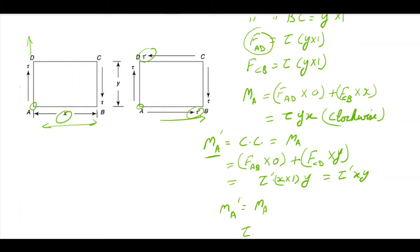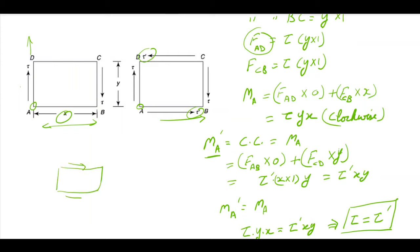Since M_A' equals M_A, we have tau·y·x equal to tau-dash·x·y. This gives us that tau must always equal tau-dash. That means whenever we have this shear force, to maintain equilibrium there is always a counter shear stress developed on the element — this is the complementary shear stress.